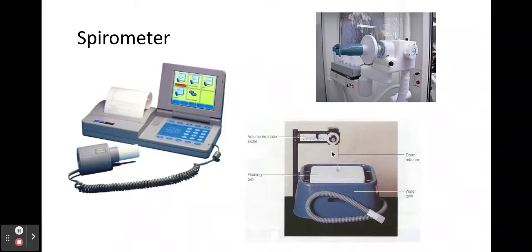They also have inside the spirometer soda lime. Soda lime is used to absorb the carbon dioxide which is breathed out by the person. It's also very important that there is pure oxygen inside so that when the person breathes in they have oxygen for aerobic respiration.